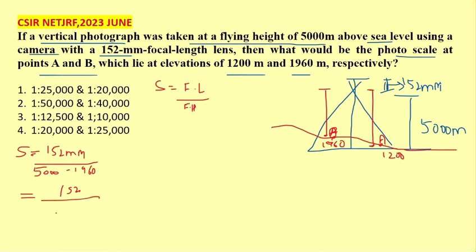3040. Subtracting, we get the denominator in meters and numerator in millimeters. This will cancel out to 20. Now we are getting 1 by 20.